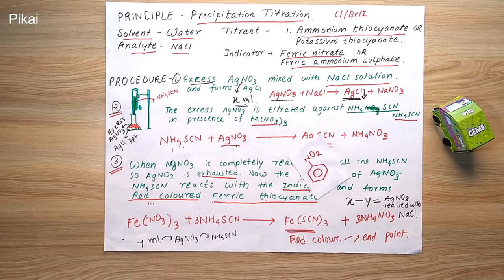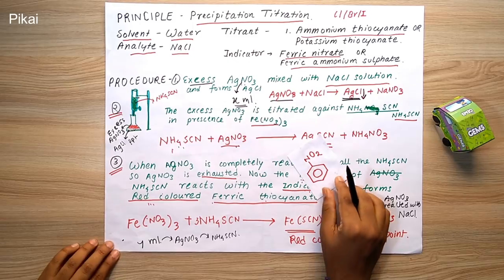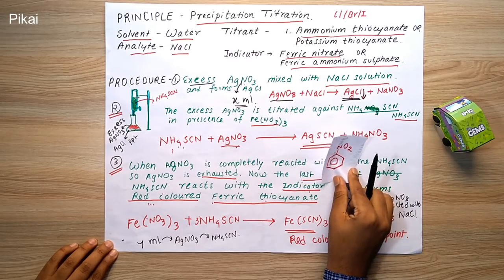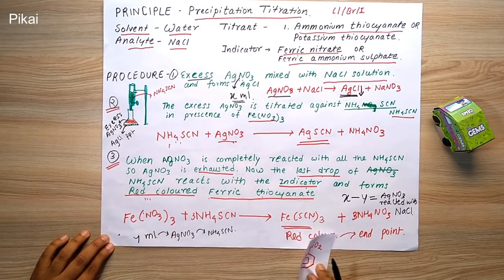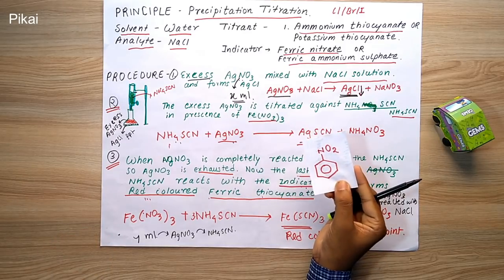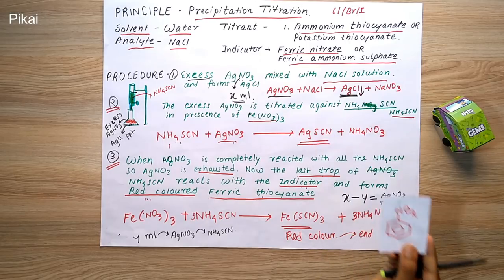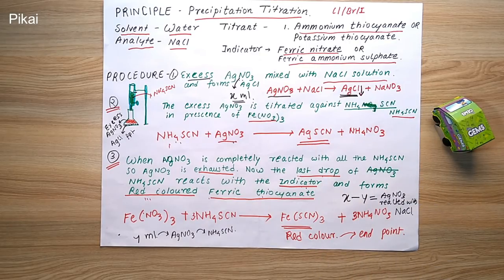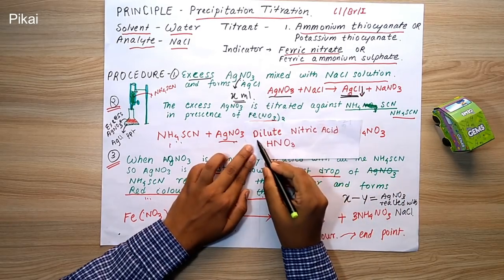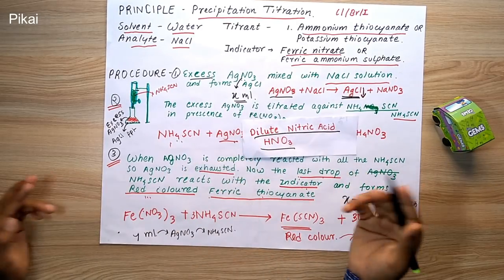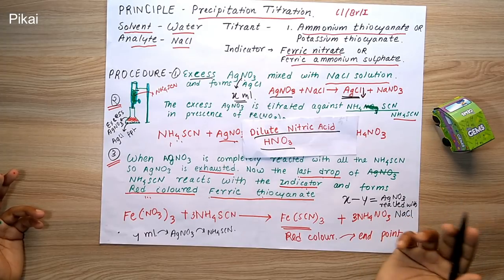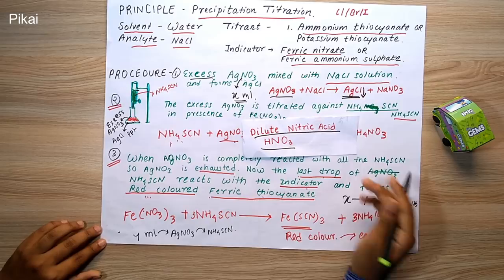Some important facts: we use nitrobenzene to prevent interaction between the AgCl precipitate formed in the first reaction and the ferric thiocyanate precipitate formed later — this avoids the need for a filtration step. We also use dilute nitric acid to make the solution acidic, because in a neutral medium, the ferric salt indicator would undergo hydrolysis.